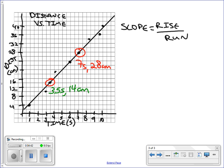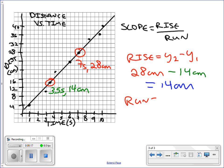So now for my rise over run, I'm going to go by those values. My rise, I can think of as y2 minus y1. So what that looks like is I'm going to do 28 centimeters minus 14 centimeters, which gets me 14. For my run, I'm going to do x2 minus x1. So that's 7 seconds minus 3.5, which comes out to be 3.5 seconds.